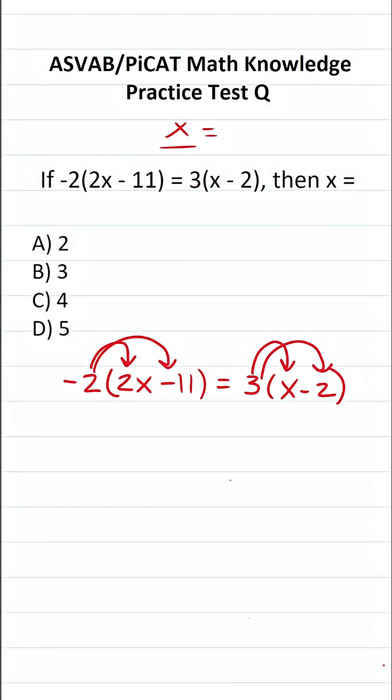Negative 2 times positive 2x, a negative times a positive is going to be negative 4x. A negative times a negative, that is negative 2 times negative 11 is going to be positive 22. 3 times x is 3x. 3 times negative 2 is negative 6.